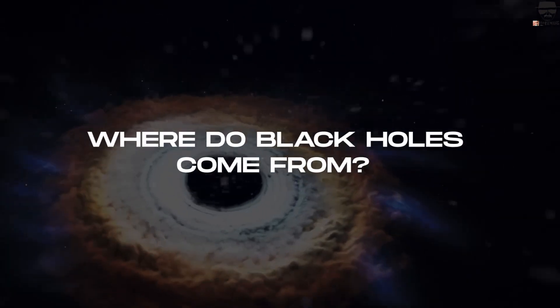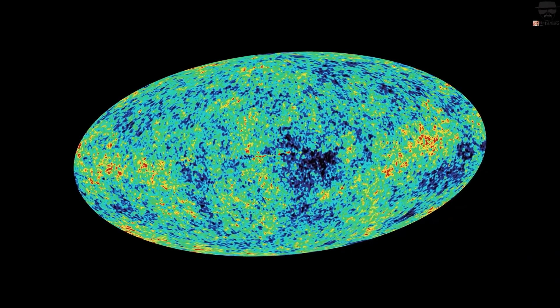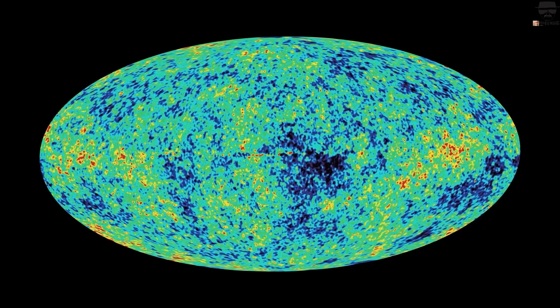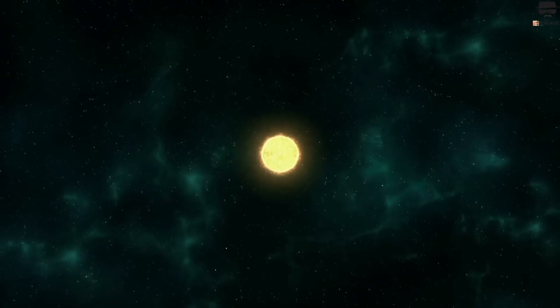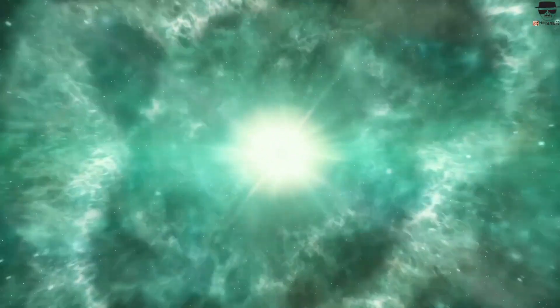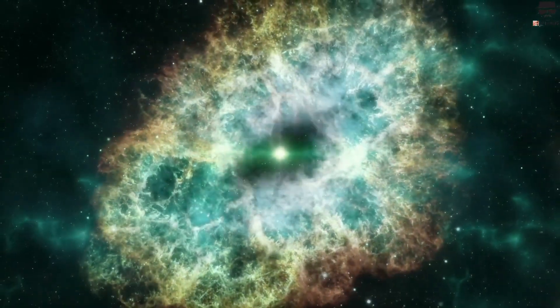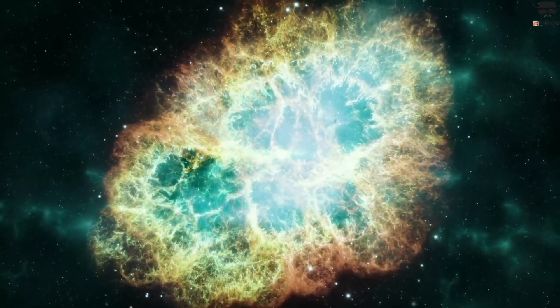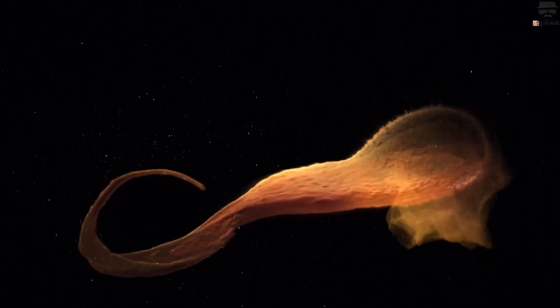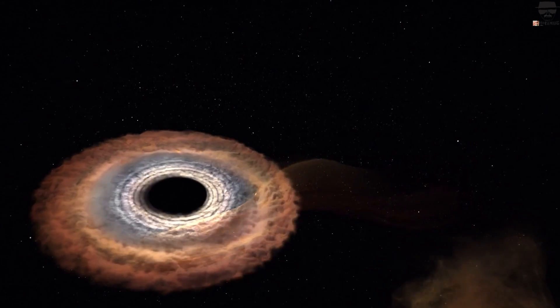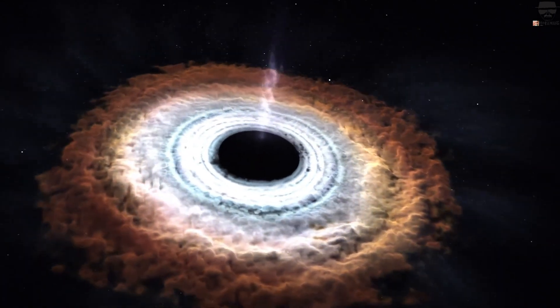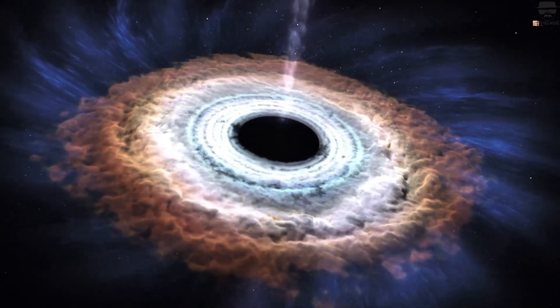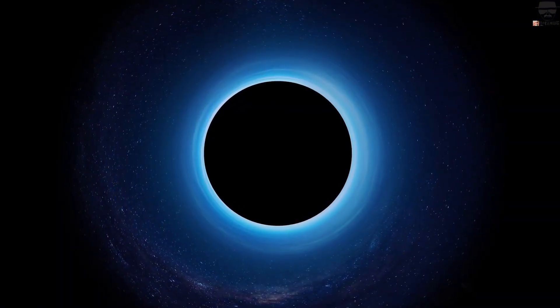Where do black holes come from? Primordial black holes are thought to have formed in the early universe soon after the Big Bang. Stellar black holes form when the center of a very massive star collapses in upon itself. This collapse also causes a supernova or an exploding star that blasts part of the star into space. Scientists think supermassive black holes formed simultaneously as the galaxy they are in. The size of the supermassive black hole is related to the size and mass of the galaxy it's in.